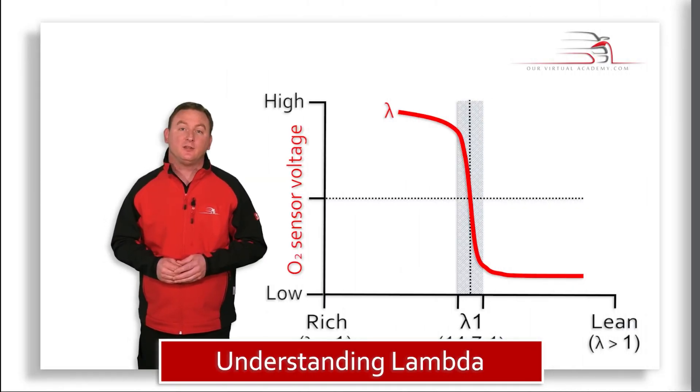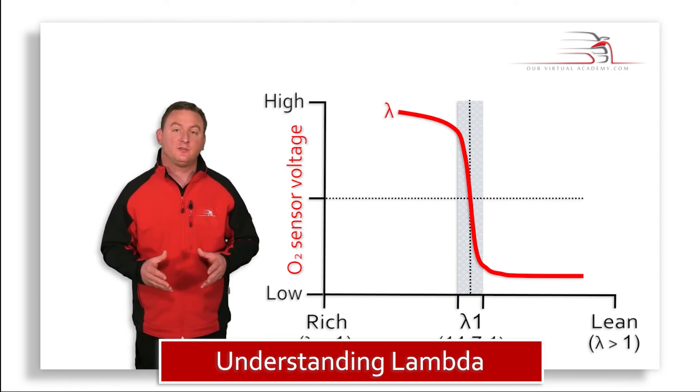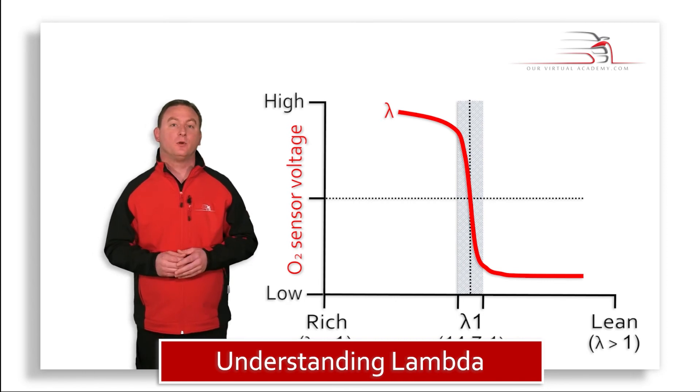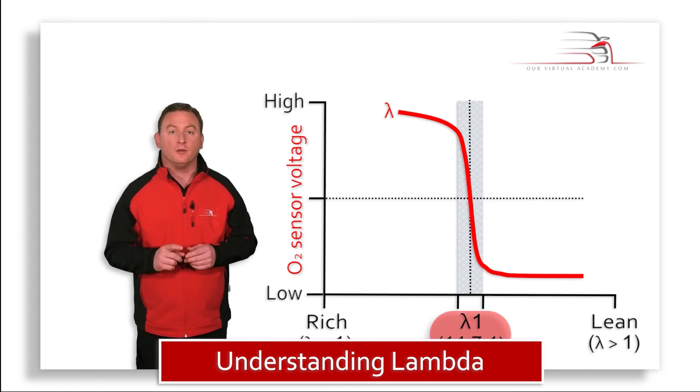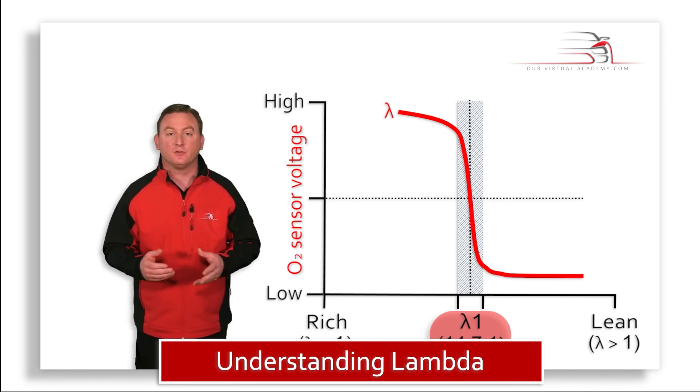Here we can see the lambda line dropping fairly quickly and steeply from a high state to a low state. Right in the middle would be our lambda value of 1, or remember, the air fuel ratio of 14.7 to 1.